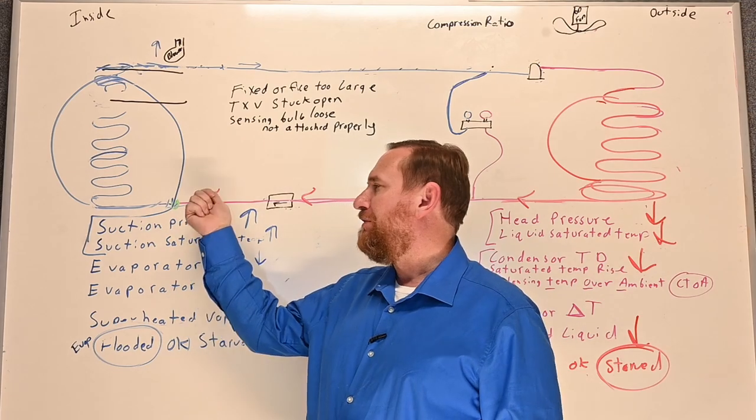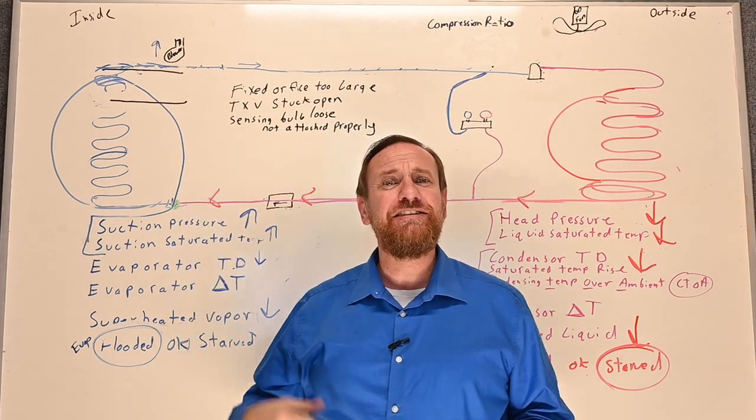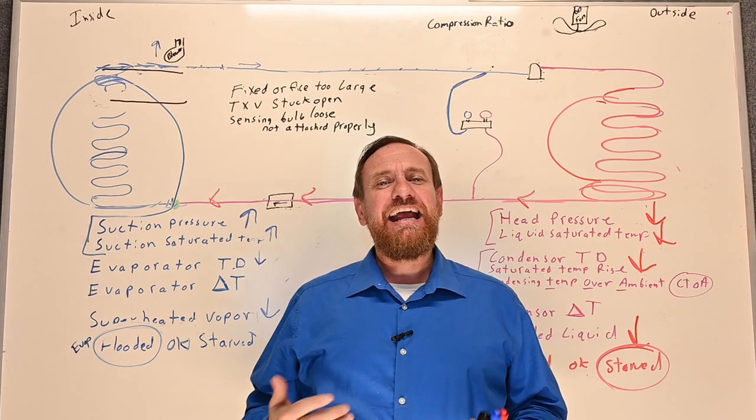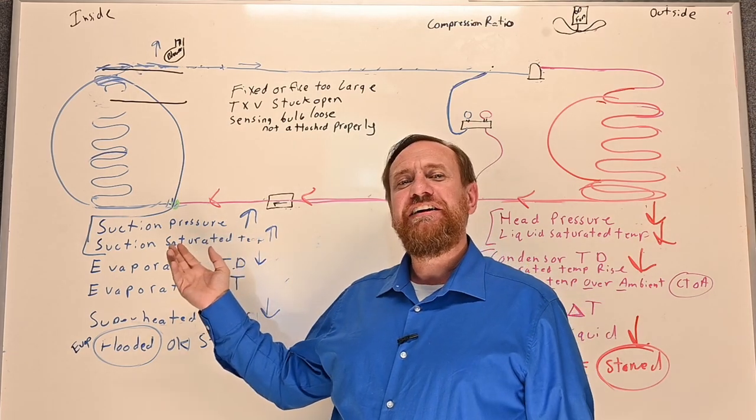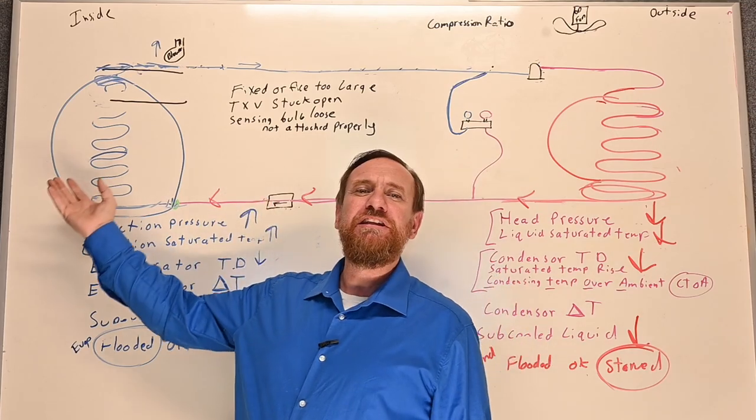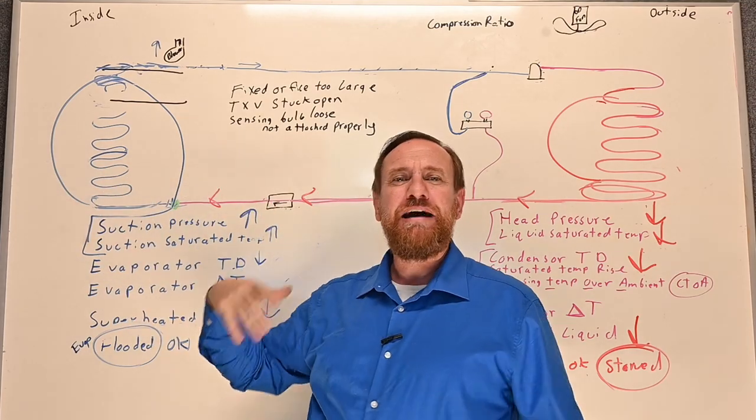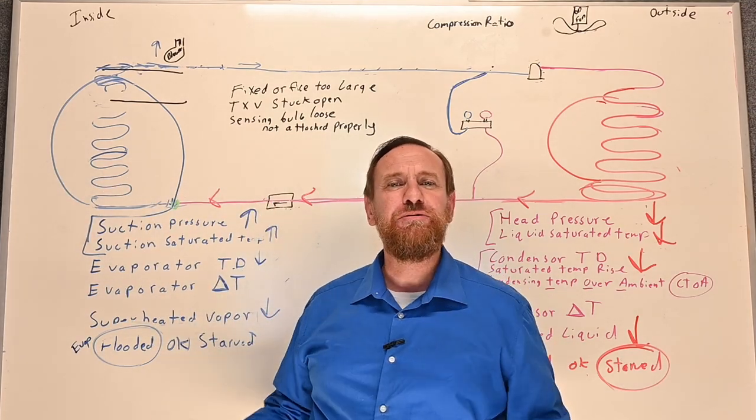I went to another scenario where somebody took the metering device out entirely. They took the metering device entirely out. And I asked the guy, why did you do that? He said, well, the scenario he thought was it would let more liquid in the evaporator. And more liquid means magically more cooling. He didn't say magical, but you get the drift.